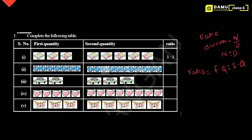Next one. Here, the first quantity: 1, 2, 3, 4, 5, 6, 7 — so 7. Then the second quantity: 1, 2, 3, 4, 5, 6, 7, 8, 9, 10, 11. So 7 is to 11. There are 11 balls in the second quantity.